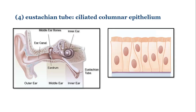Ciliated columnar epithelium is present in the Eustachian tube. This tube equalizes pressure on either side of the eardrum, and the presence of ciliated epithelial cells helps remove secretions and debris from the middle ear.